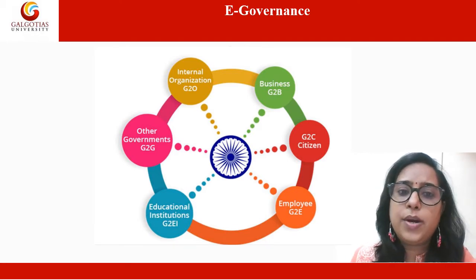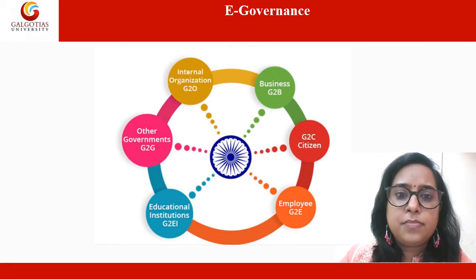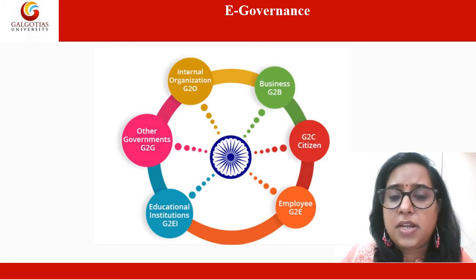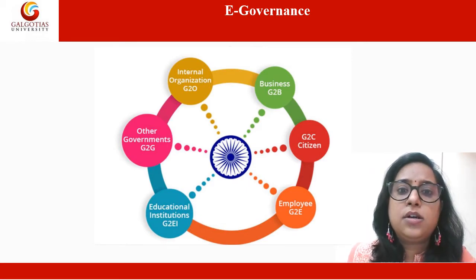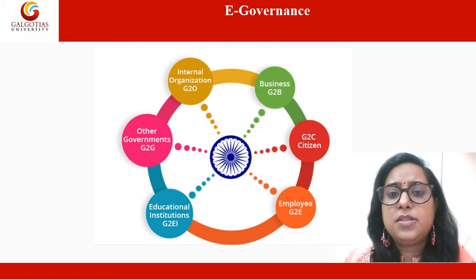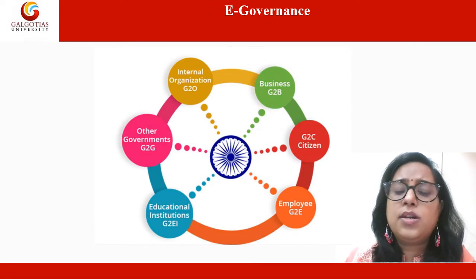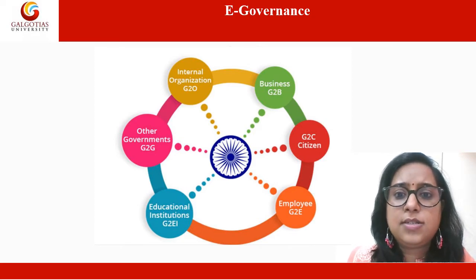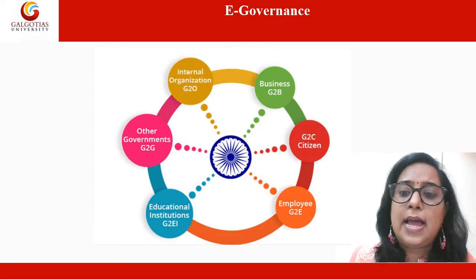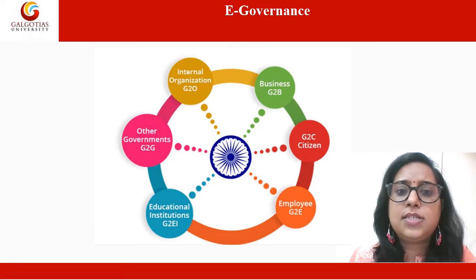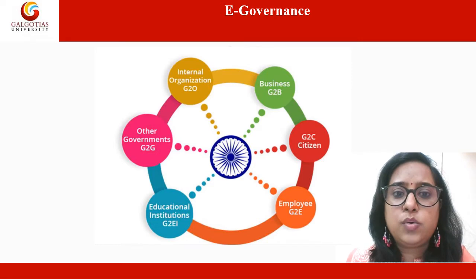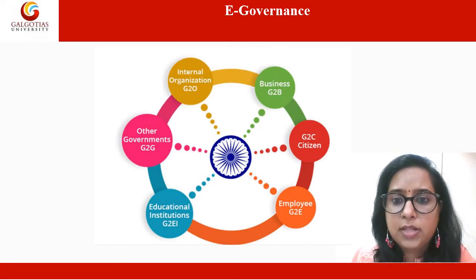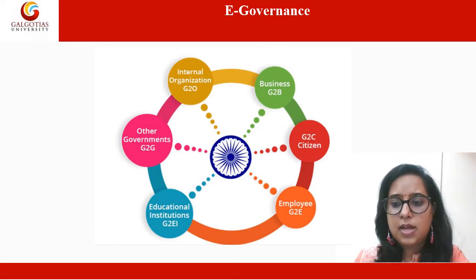Reasons for opting e-governance: governance per se has become very complex with an increase in citizens' expectations from government. Different connotations of e-governance include e-administration — the use of ICTs to modernize the state, the creation of data repositories for management information systems, and computerization of records such as land, health, etc. E-services emphasize bringing the state closer to citizens, for example through provision of online services. E-administration and e-services together constitute what is largely termed as e-government.